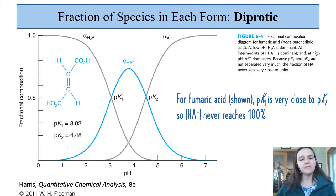Mathematically speaking, the fraction of each species in each form can also be calculated. But before I give you those formulas, I want you to look at this graph. We again have the pH on the x-axis, and we have the fractional composition on the y-axis. In this case, we're looking at fumaric acid, which has two pKa values that are pretty close to each other.